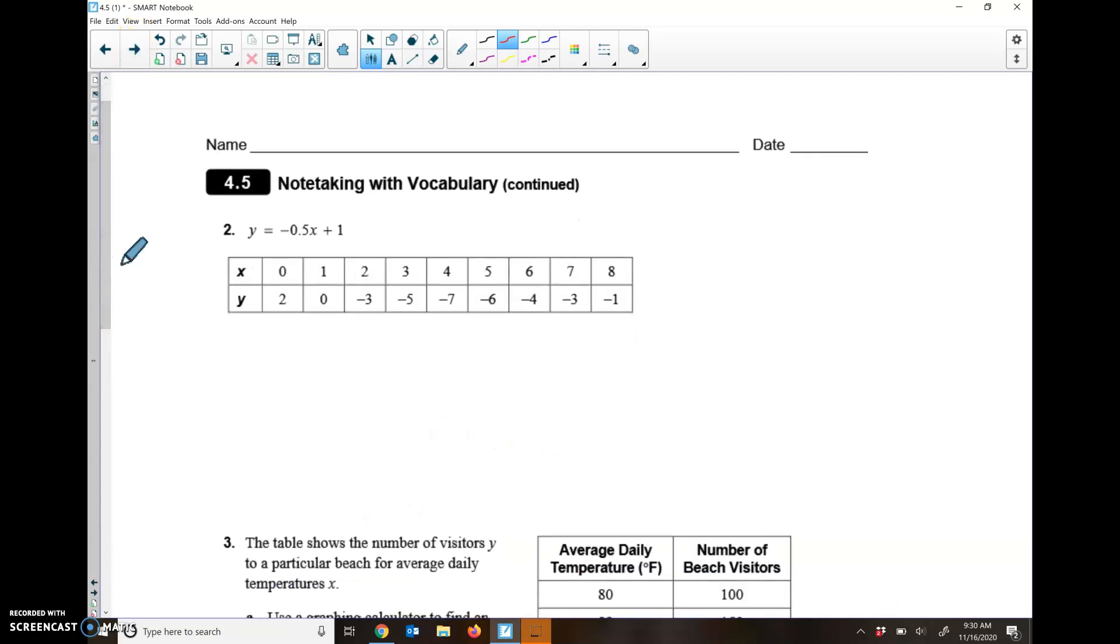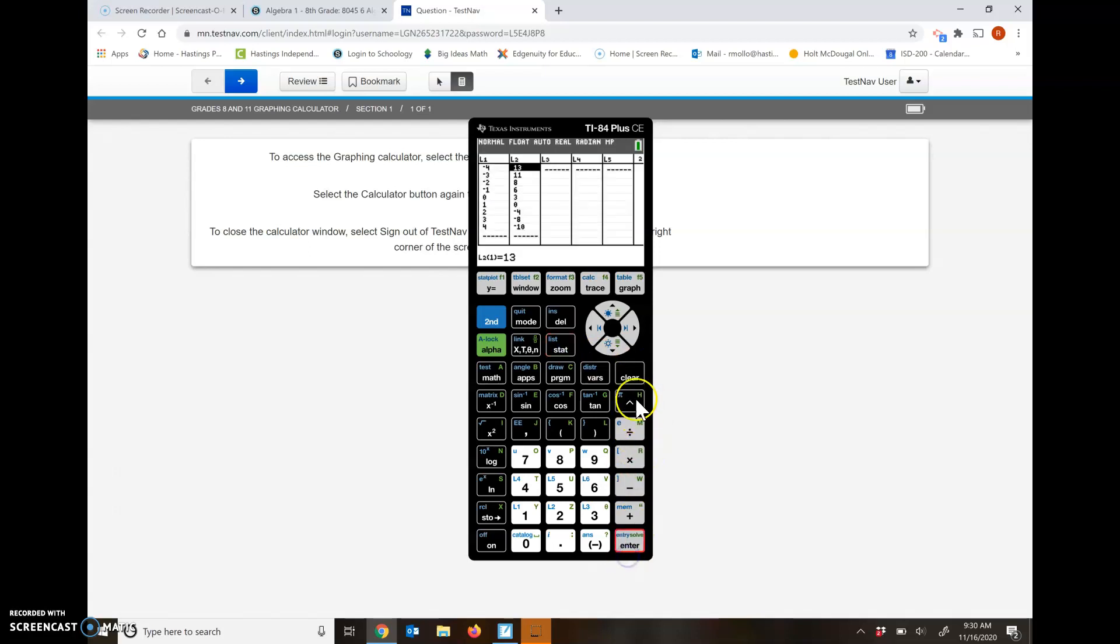Same thing here. They want to see if this is a good fit. It's negative 0.5X plus 1. Let's go back and put that in our calculator. Clear this list. We got 0, 1, 2, 3, 4, 5, 6, 7, 8, and then we got 2, 0, negative 3, negative 5, negative 7, negative 6, negative 4, negative 3, and negative 1.